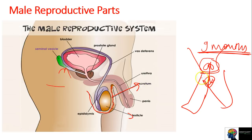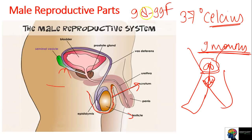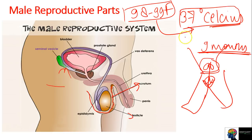Now, why are testicles outside the human body? The reason is that the temperature needed for sperms to form is 2 to 3 degrees lower than the body's temperature. Our body's core temperature is around 37 degrees Celsius - which is around 98-99 degrees Fahrenheit. But sperms cannot develop at that temperature, so the testicles are outside the human body.